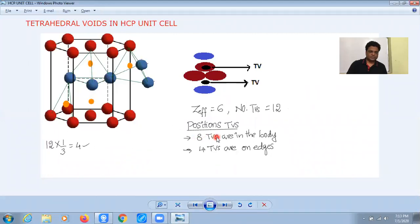Six at these positions, two at these positions, together makes eight tetrahedral voids within the body. Eight tetrahedral voids within the body and four tetrahedral voids on the edges. Together, twelve tetrahedral voids are observed in an HCP unit cell.